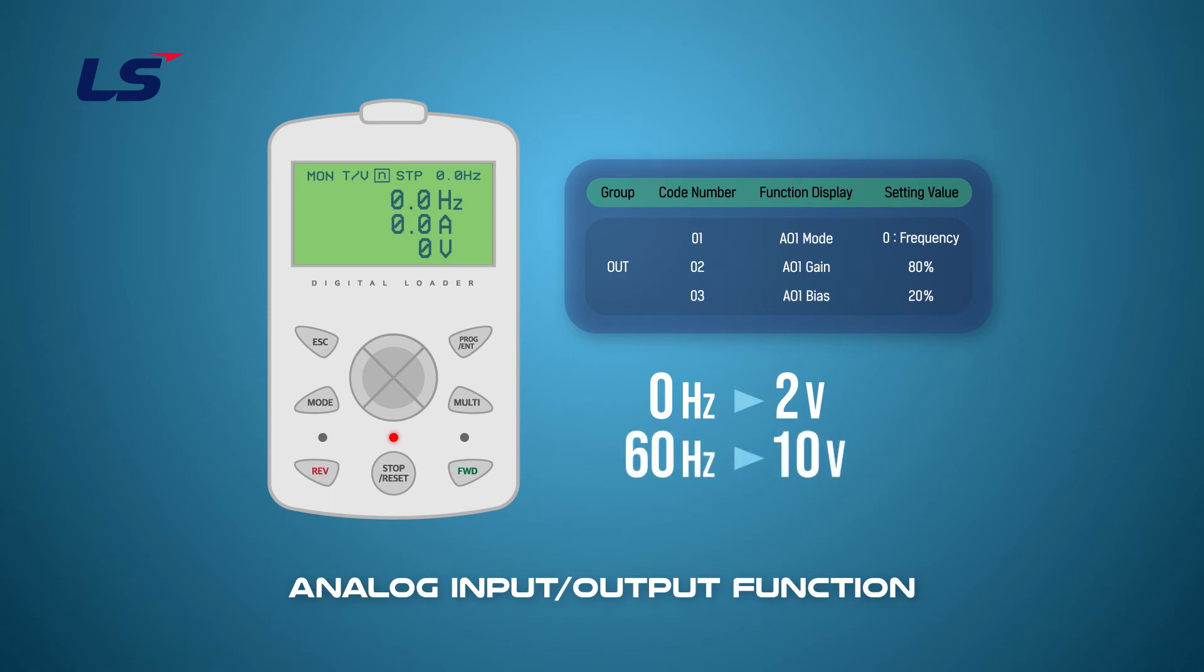First, press the mode key to enter parameter mode. Use the directions keys to move to the OUT group. Select 0 frequency in AO1 mode. Set the gain value for analog output to 80% in OUT group 2 AO1 gain. And bias value for analog output to 20% in OUT group 3 AO1 bias.